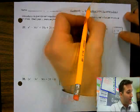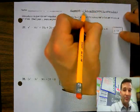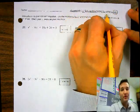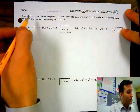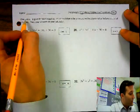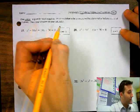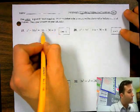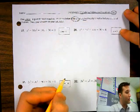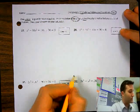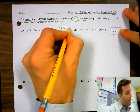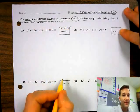Alright guys, so we are working on homework 5.5, and this is day two of solving polynomial equations. We're going to take our pencil and annotate the instructions. One solution is given for the equation. Use this solution to factor and solve the polynomial for the additional solution. So this is a solution, and we need to make it into a factor.